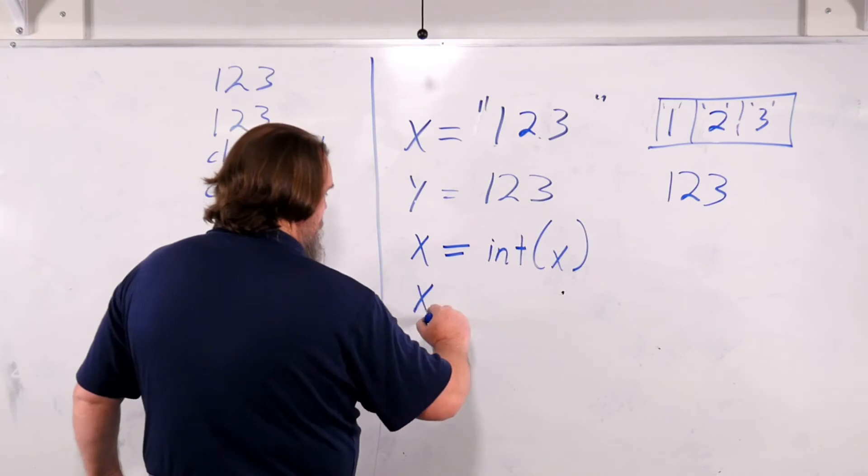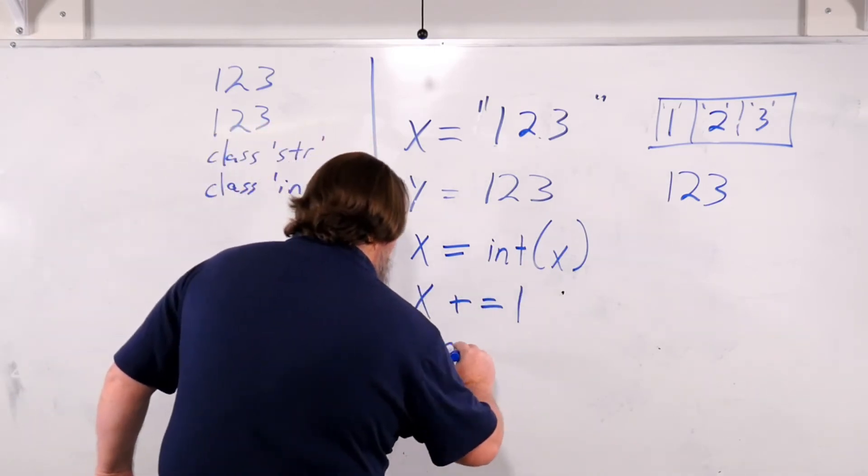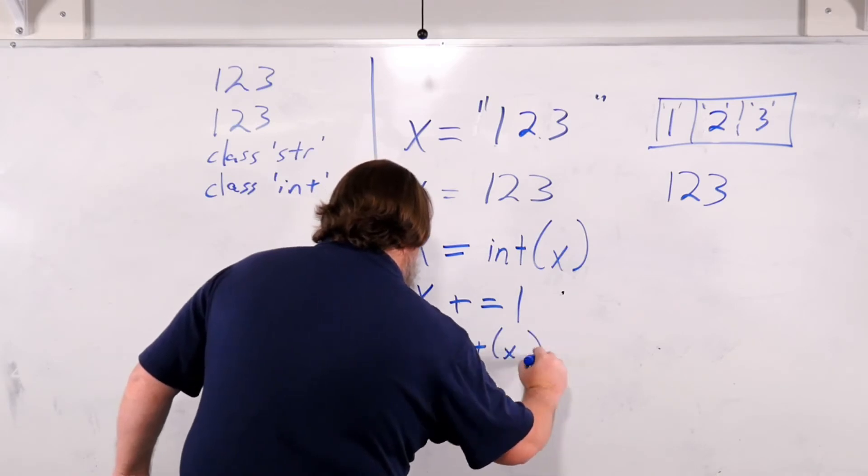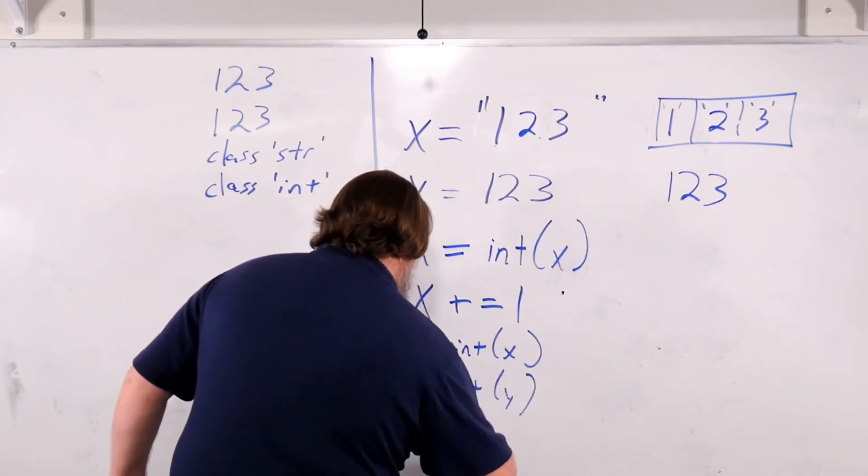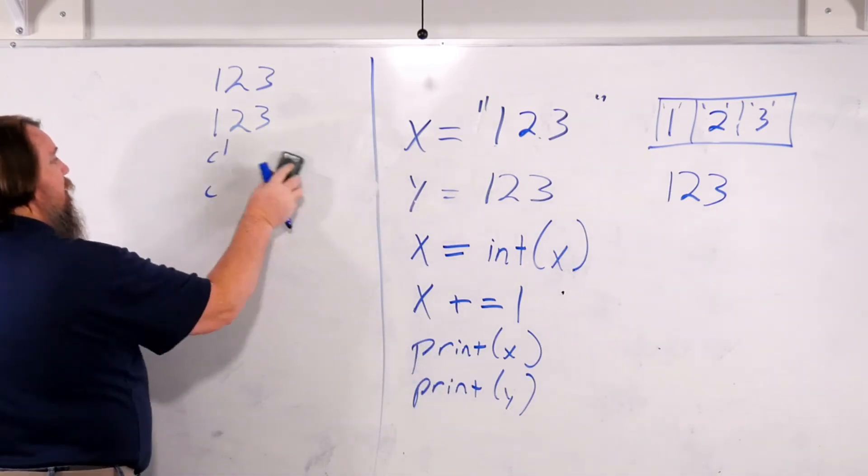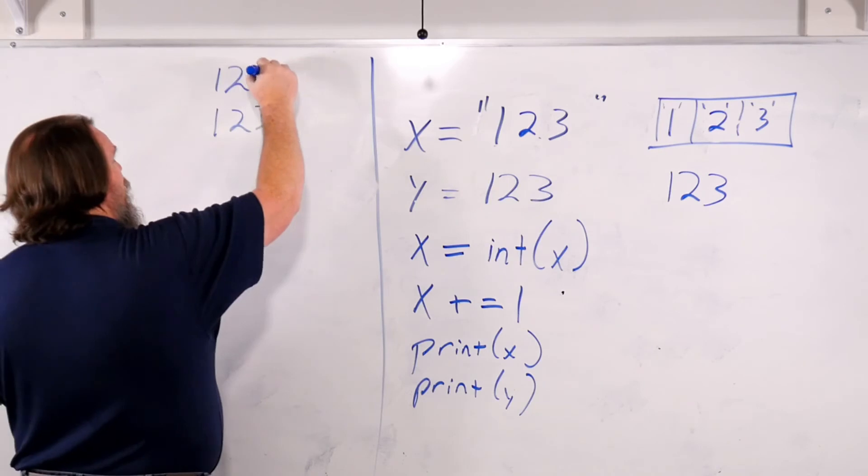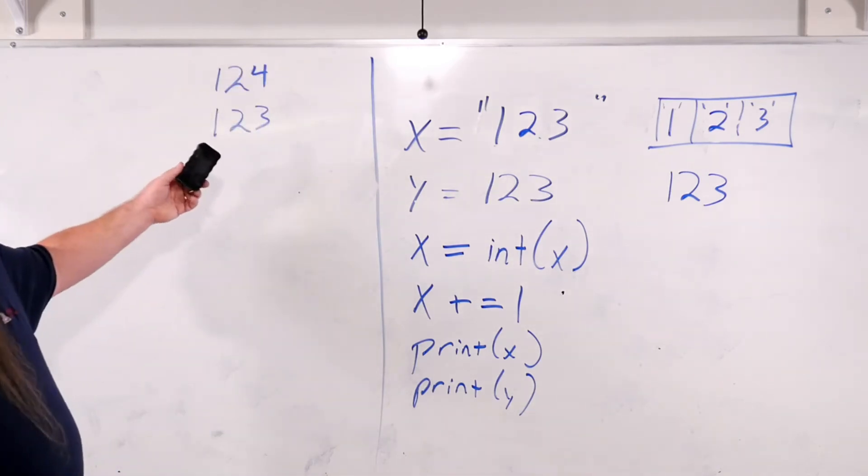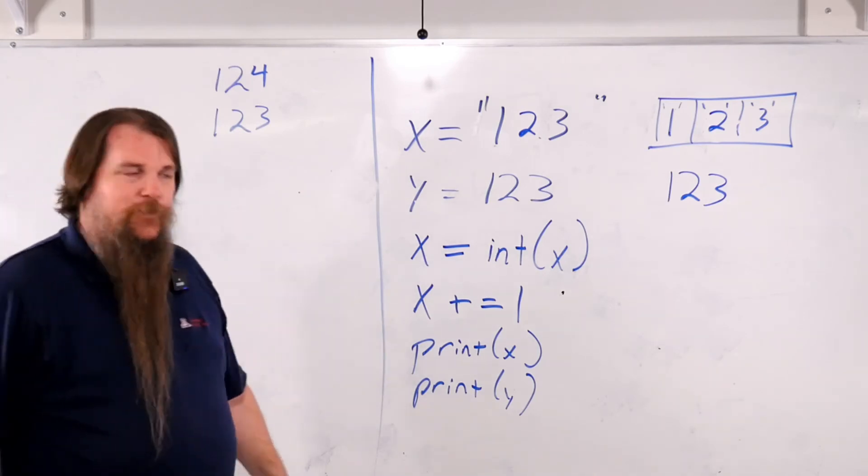Now we can say x plus equals 1. If we print x and then print y, then our output will be that we'll first print 1, 2, 4. We'll print literally the integer 124. Then we'll print the integer 123.